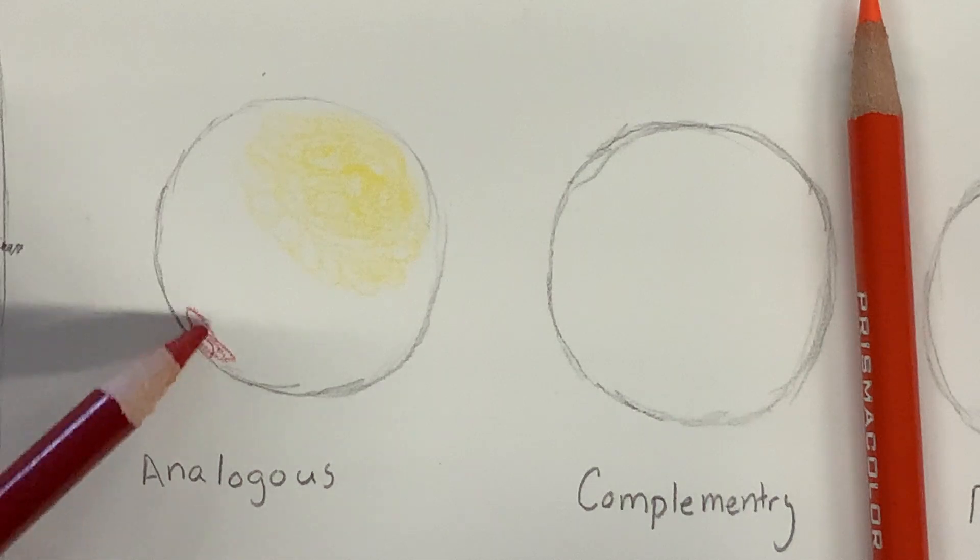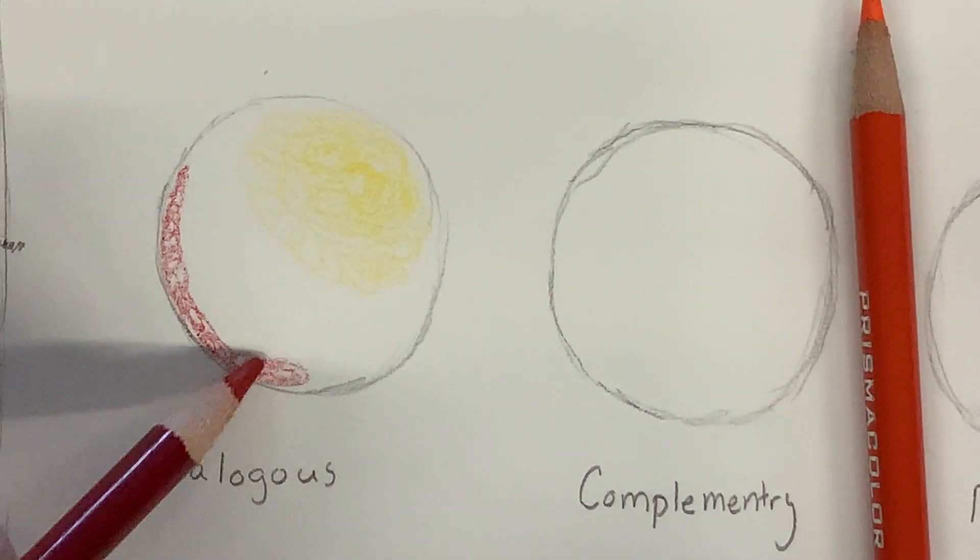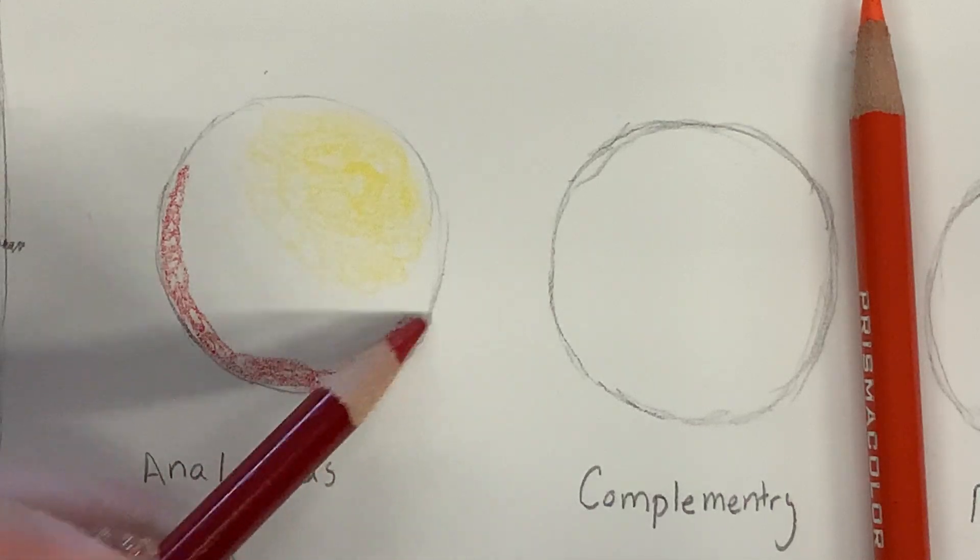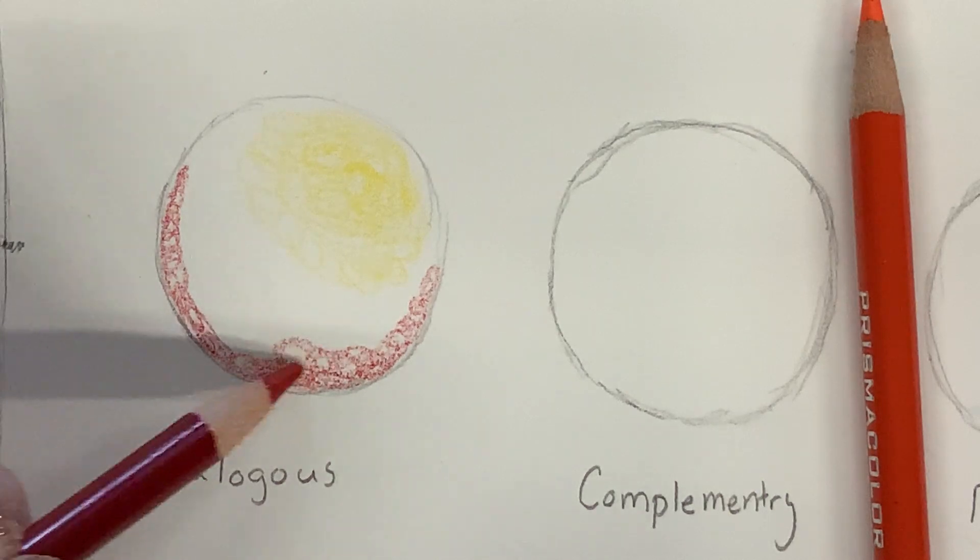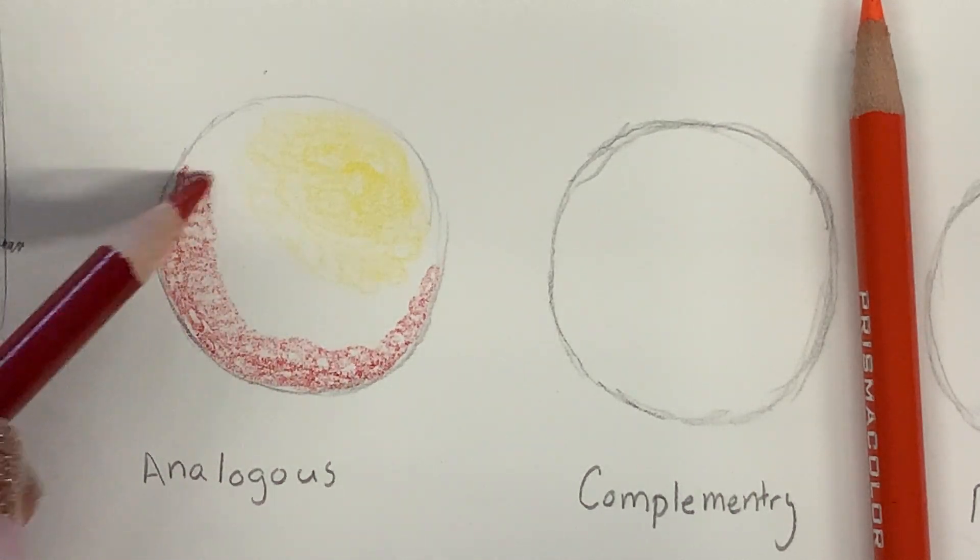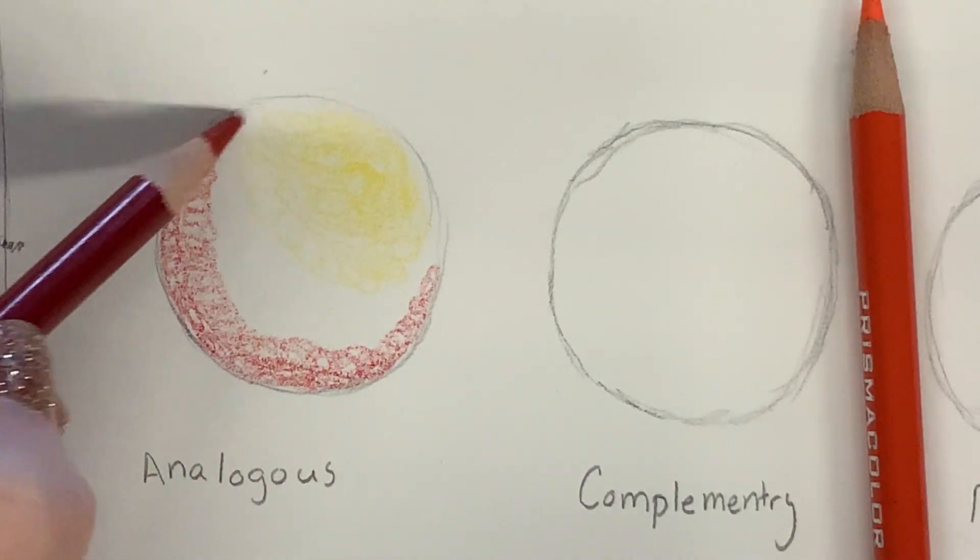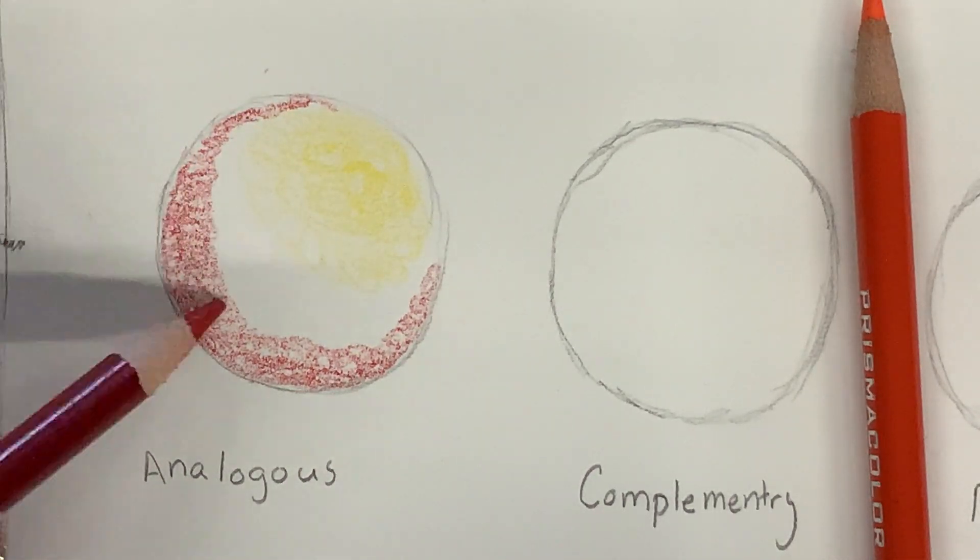Along the base, I'm going to come in with red. So, this is going to be where our shadows are. Still not being super hard and pressing down, because I'm going to want to get some mixtures in there.